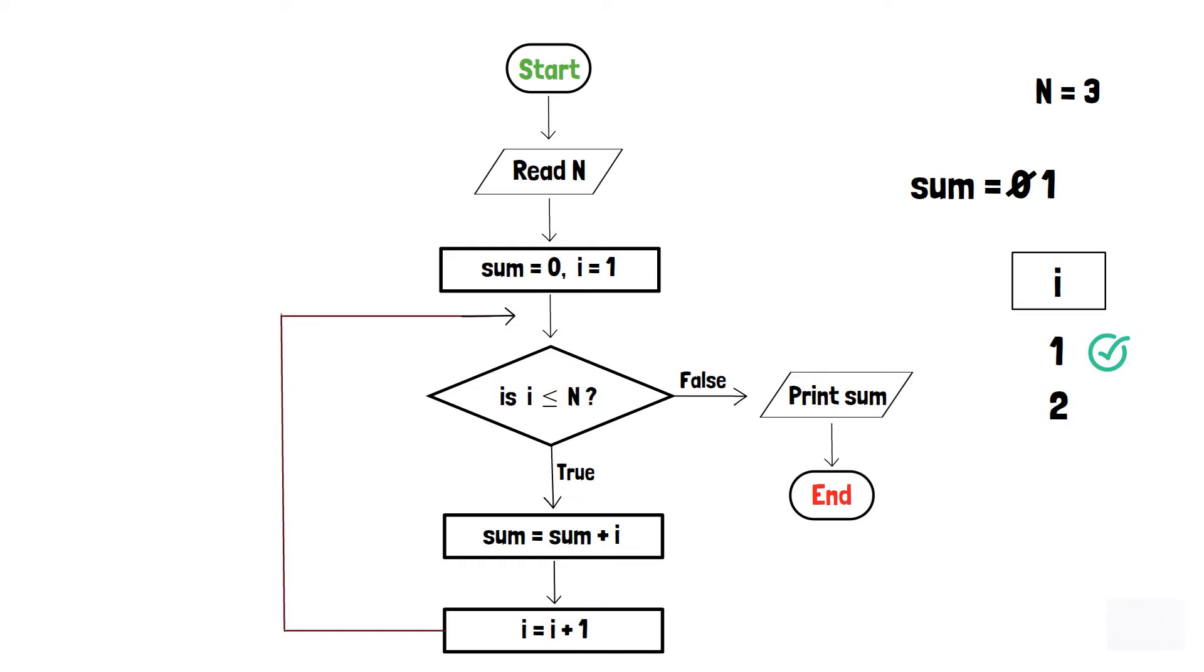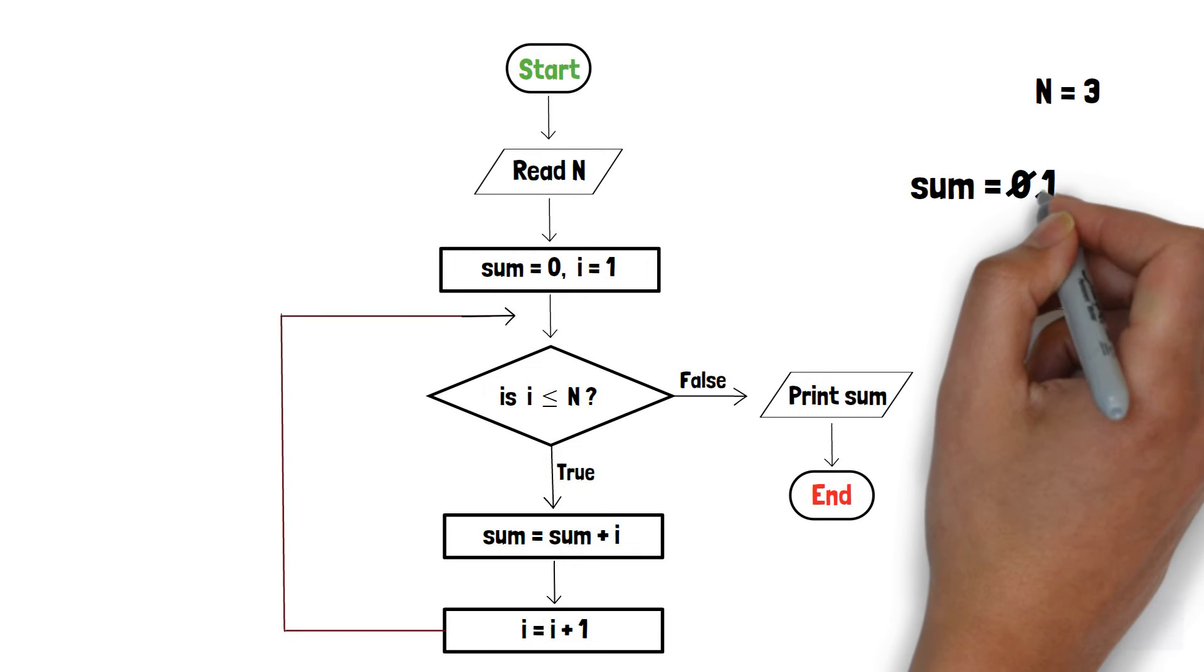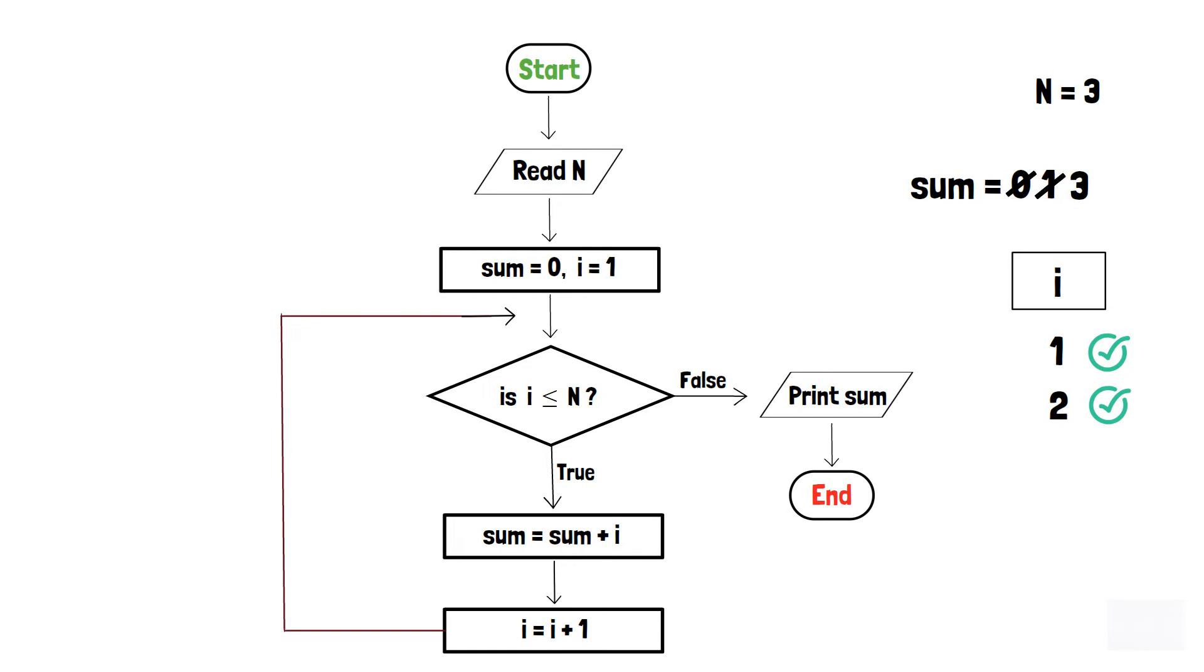Now again, it will check whether 2 is less than or equal to n or not. As n is equal to 3, the condition in the decision box is true. Therefore, the sum becomes 1 plus 2 which is 3, and i becomes 3 after incrementation.